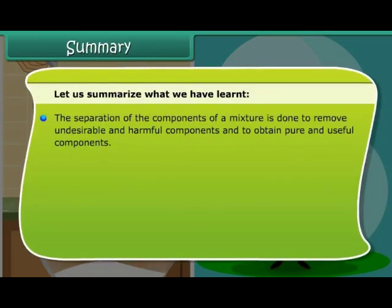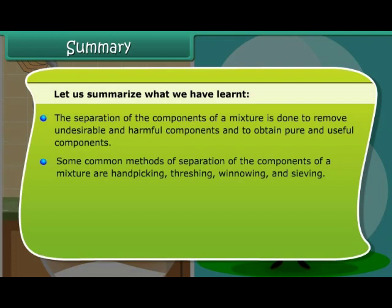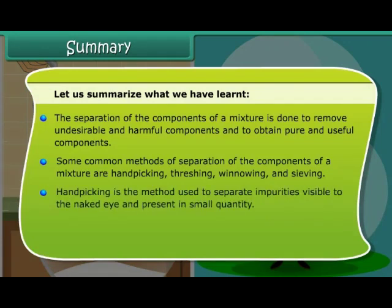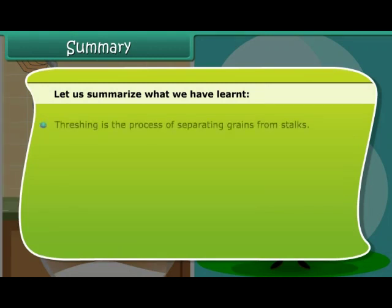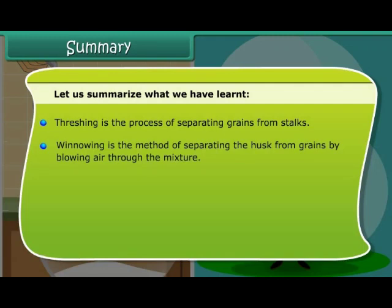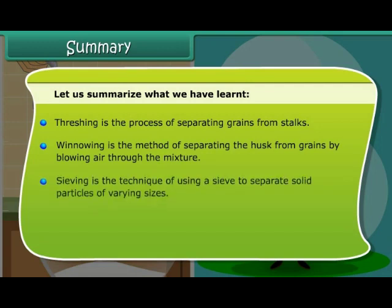Let us summarize what we have learned. The separation of the components of a mixture is done to remove undesirable and harmful components and to obtain pure and useful components. Some common methods of separation are hand-picking, threshing, winnowing and sieving. Hand-picking is used to separate impurities visible to the naked eye and present in small quantity. Churning refers to the process of agitating or stirring milk or curd to make butter. Threshing is the process of separating grains from stalks. Winnowing is the method of separating the husk from grains by allowing air to blow away the lighter impurities. Sieving is the technique of using a sieve to separate solid particles of varying sizes.